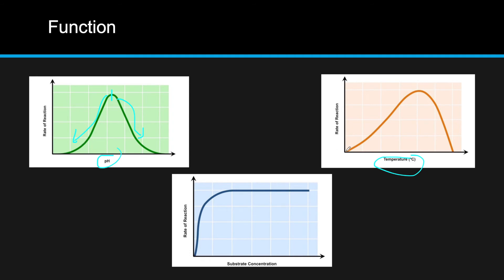With temperature, it's a different graph. As we increase temperature, we're actually going to increase the rate of reaction. However, once we get past a certain point, it's going to start breaking down the bonds and the intermolecular forces, denaturing the protein and ruining the enzyme. Finally, we have substrate concentration. If we want the rate of reaction to increase, we can increase the concentration. However, you only have so many enzymes, and once they're taken up, there are no more, so the rate kind of levels off and stops increasing.